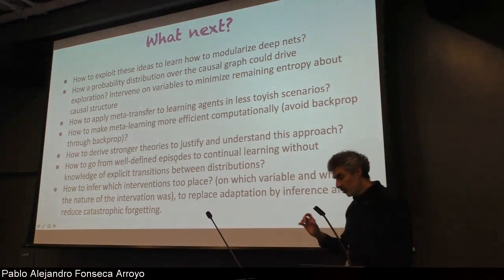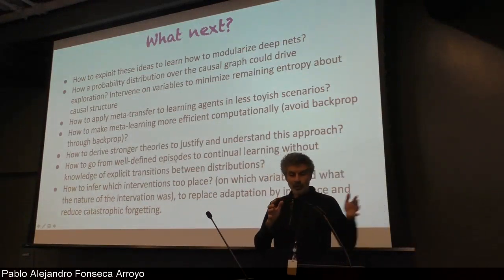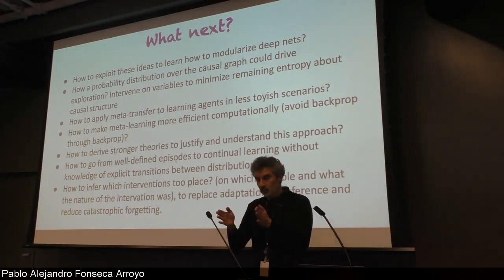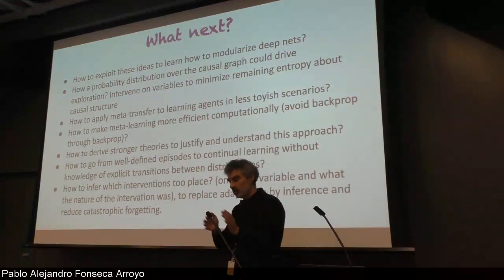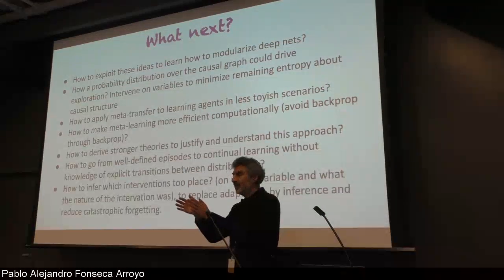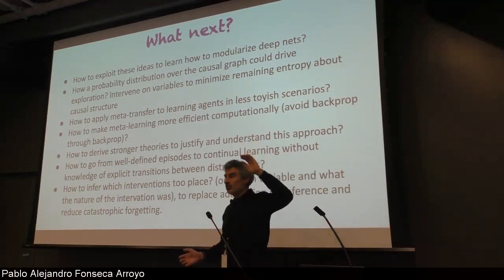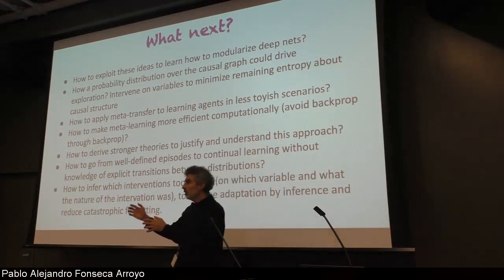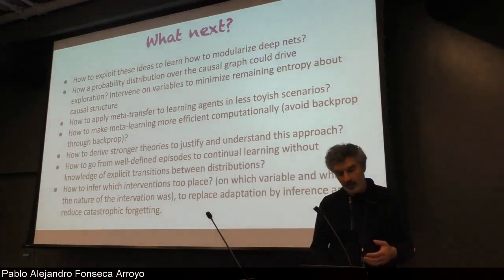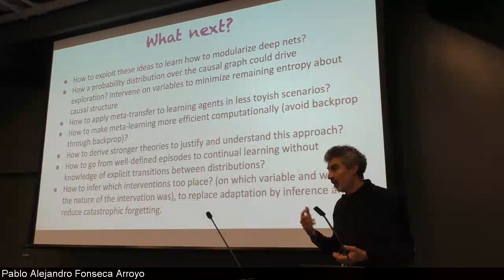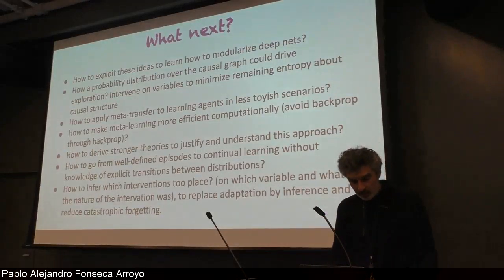Up to now we've considered a very simple scenario where you train and then have one new distribution, and repeat many times. But in the real world there's no signal telling you when there's a new distribution - you just have an online stream. I think the same ideas would work in a completely online setting, but that needs to be worked on.